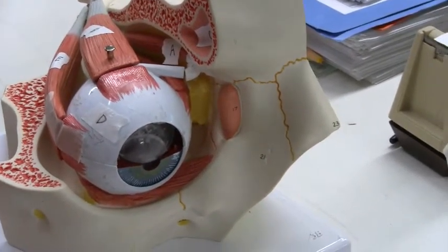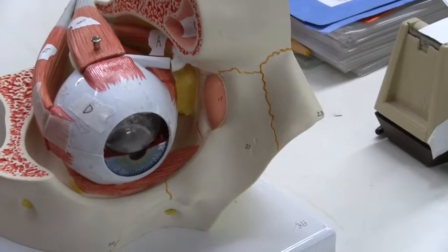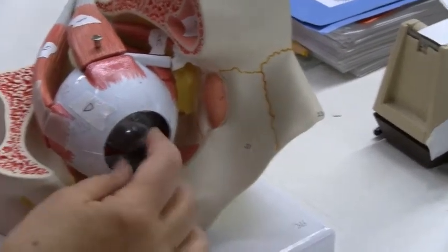There's a neural one. Fibrous, yeah. That's right. Fibrous is made up of the sclera and the cornea. The cornea's missing here.